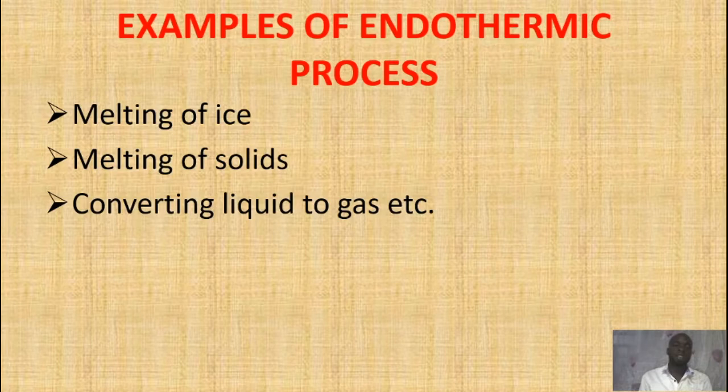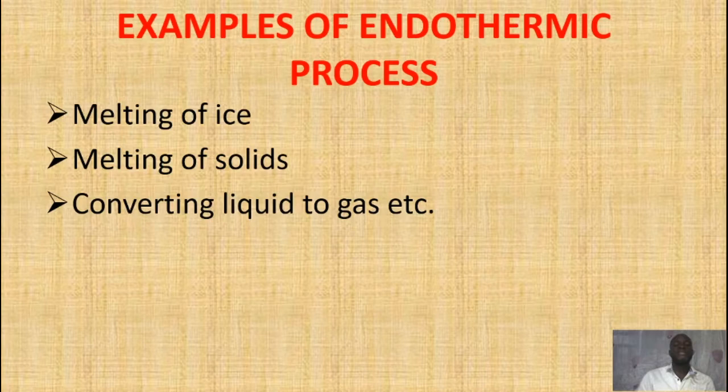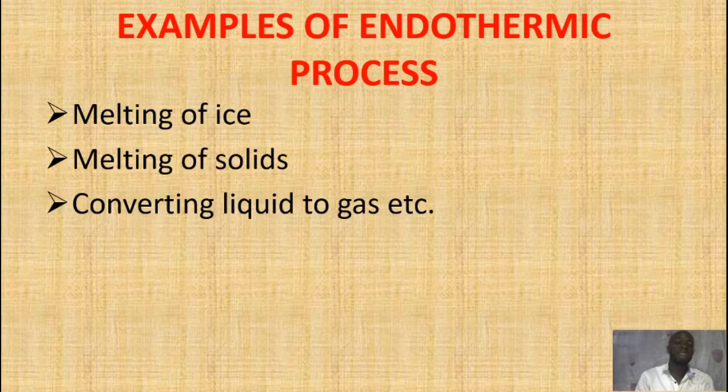Another example is the melting of solids. When you are melting solids — let's assume you take your rubber or plastic and put it on fire — what it does is that it absorbs heat from the fire or from the surroundings to become liquid, and itself becomes hot, so that the heat from the surroundings will leave the surroundings, causing the surroundings to become cold.